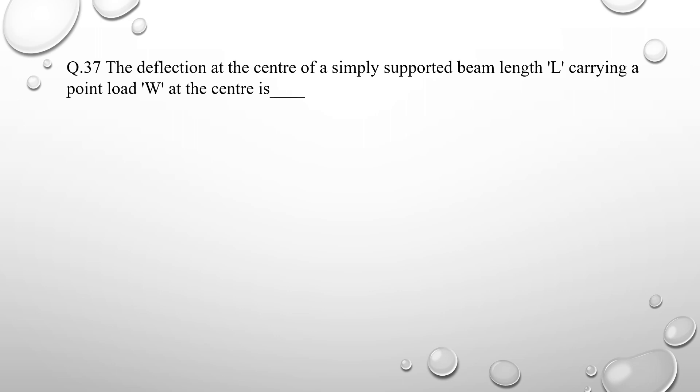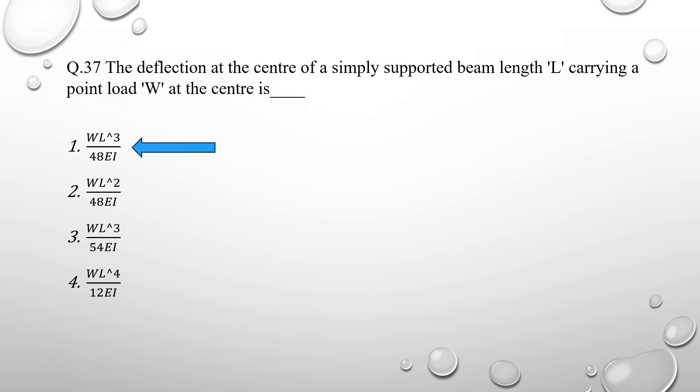Question number 37: the deflection at the center of a simply supported beam of length L carrying a point load W at the center. A related question on slope and deflection was previously discussed in detail in the WRD PYQ series — check the previous videos for complete explanation. For a simply supported beam with length L carrying a point load W at the center, the deflection is WL³ divided by 48EI.